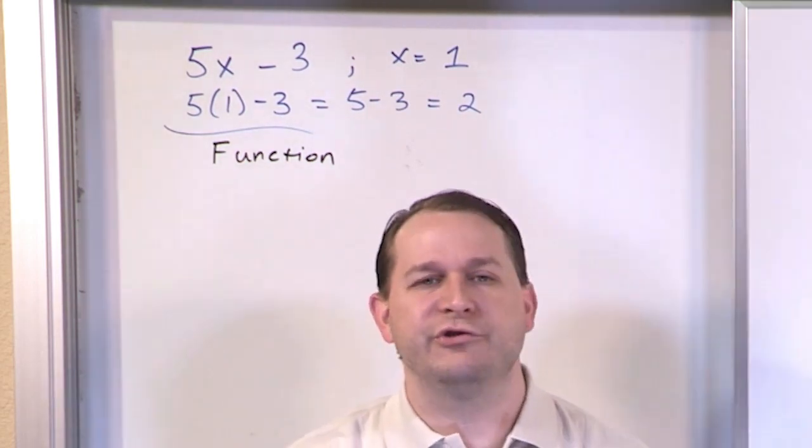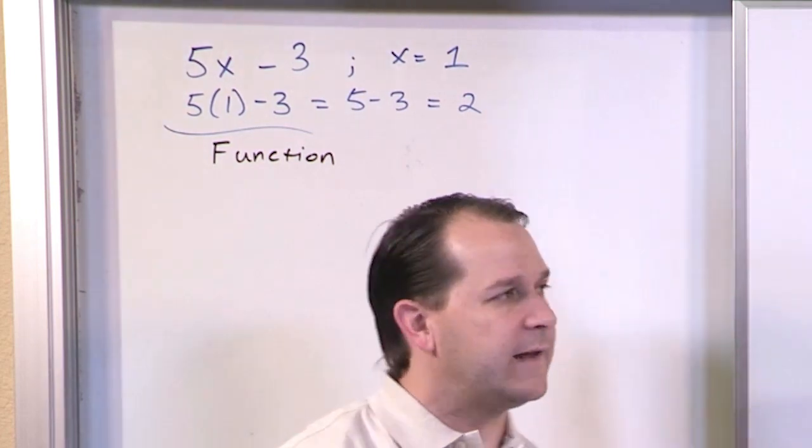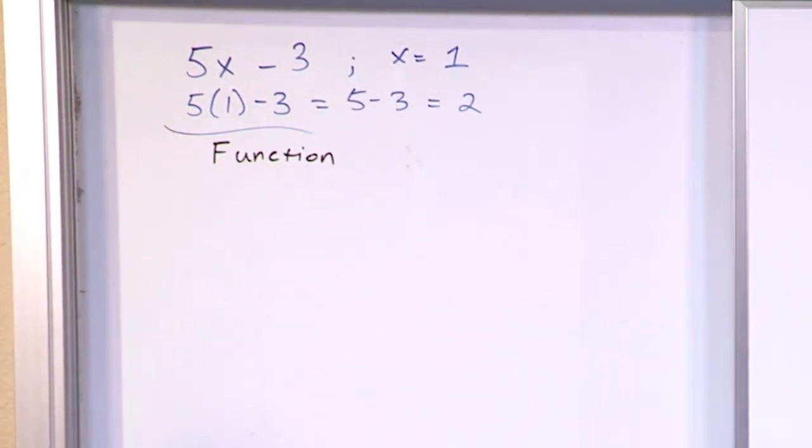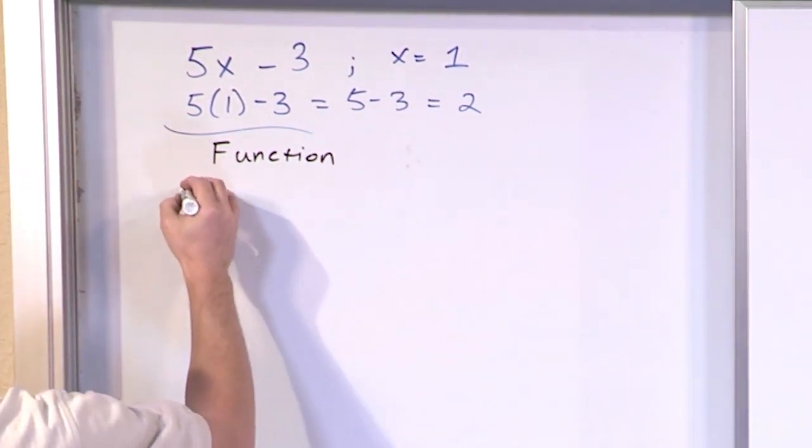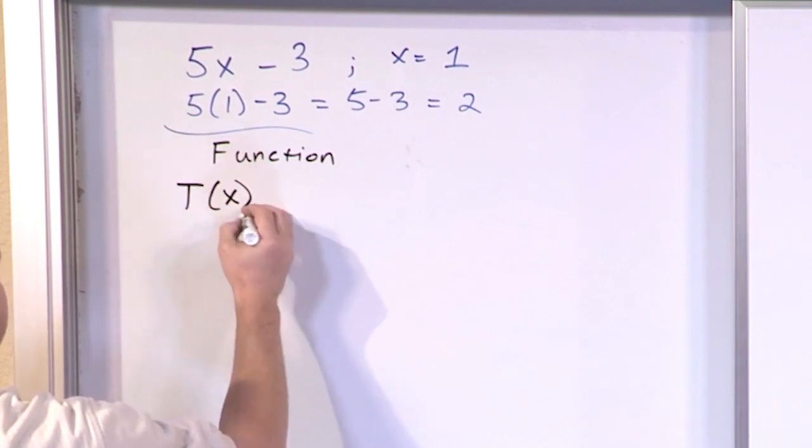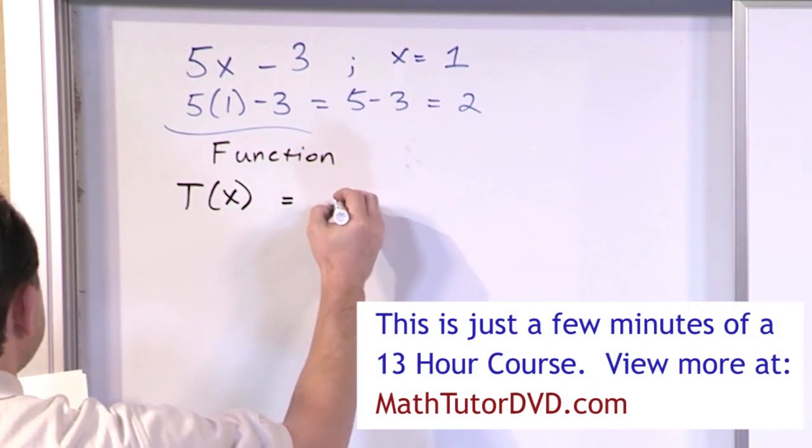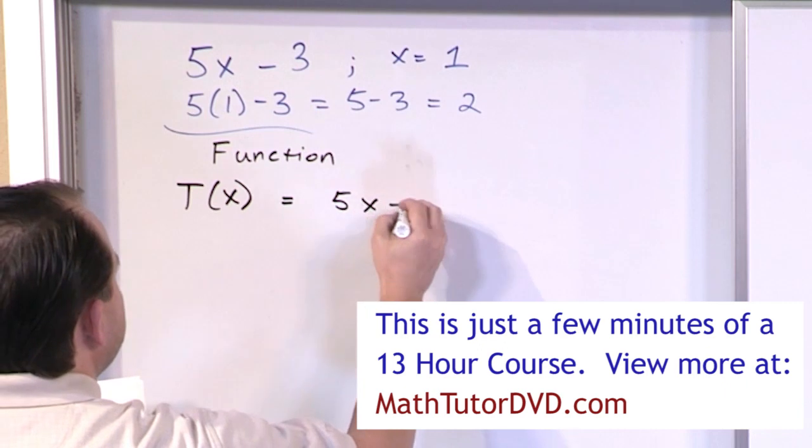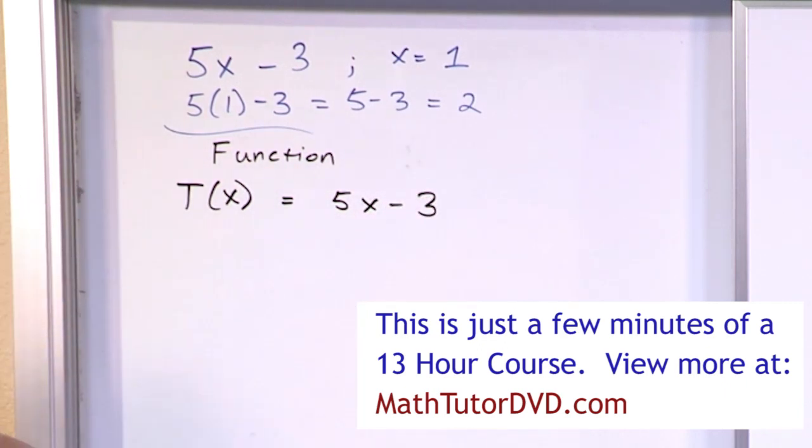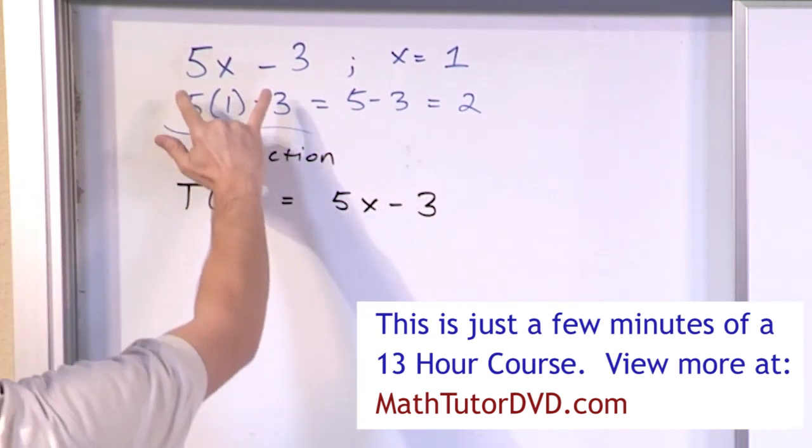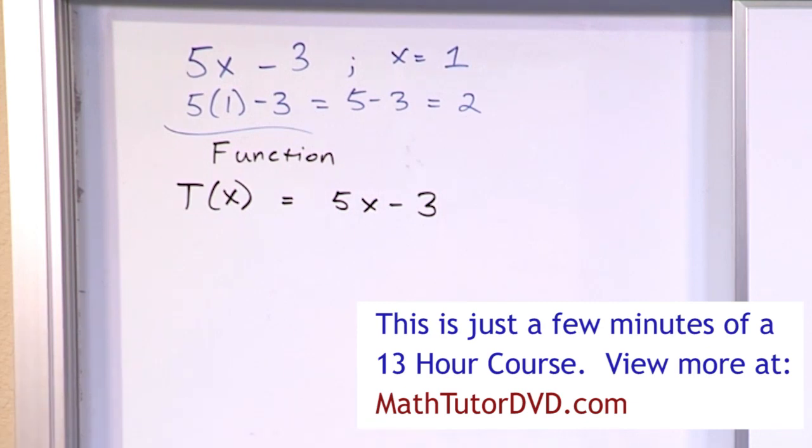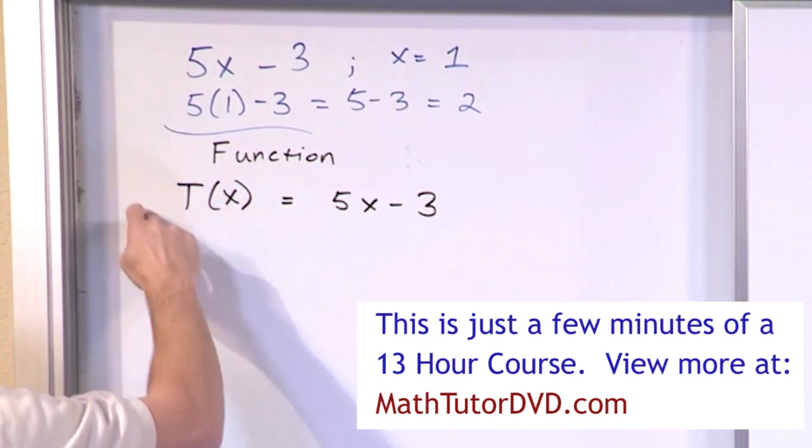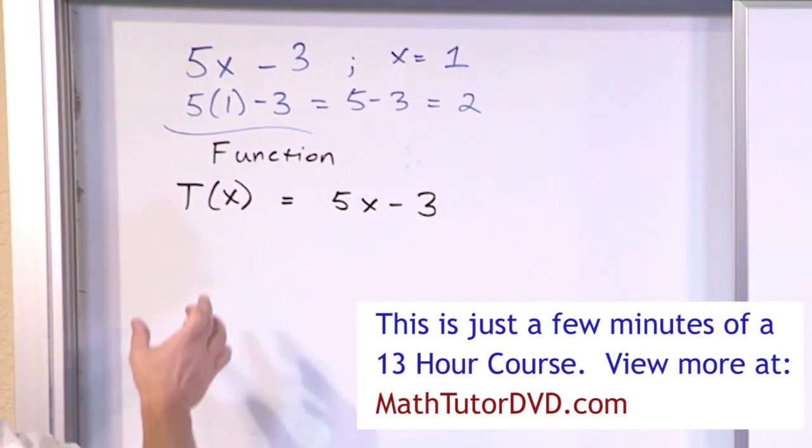So, functions in algebra do a job. They calculate things. And let me give you an example of that. What if I have a function, T(x), and I'll explain what all this means in a minute, is equal to 5x minus 3. Notice I use the same exact thing, 5x minus 3. I use the same thing that I used up there because I'm trying to basically tell you it's the same thing that we've been doing all along. It's just written down a little bit differently.